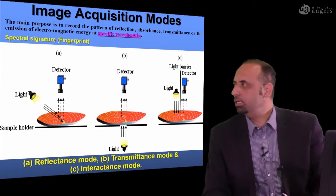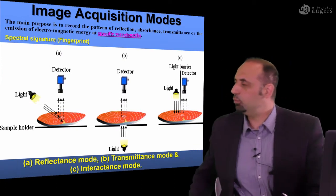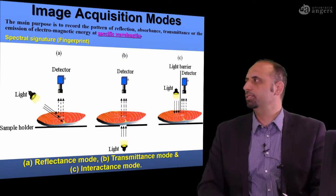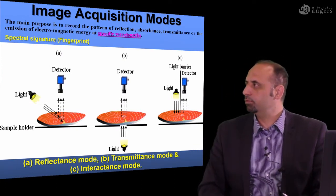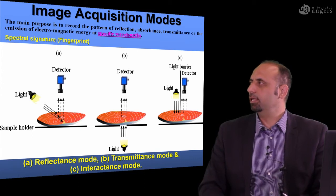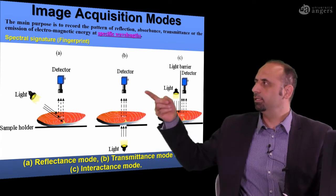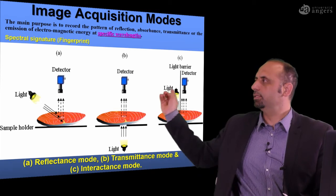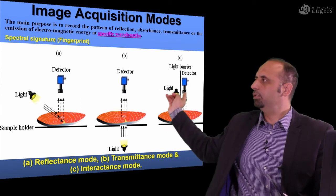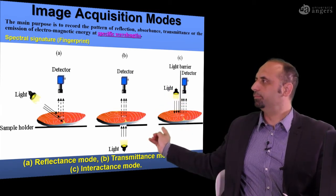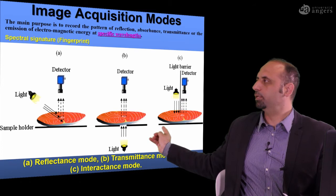If we imagine any spectral imaging system, it has three main components: the light source, the detector, and the conveyor.